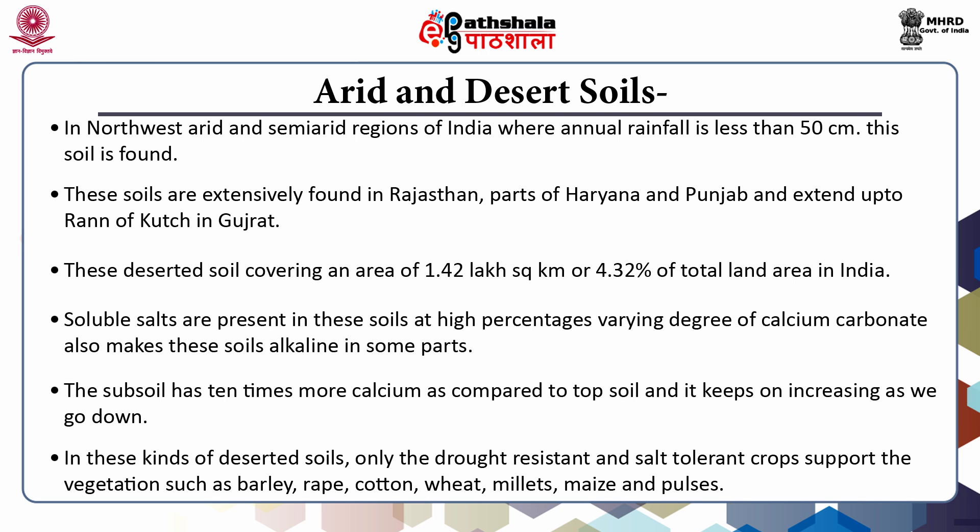Nitrogen is originally low, but its deficiency is made up to some extent by the availability of nitrogen in the form of nitrates. Thus, the presence of phosphate and nitrates make them fertile soils wherever moisture is available. There is therefore great possibility of reclaiming these soils if proper irrigation facilities are available.